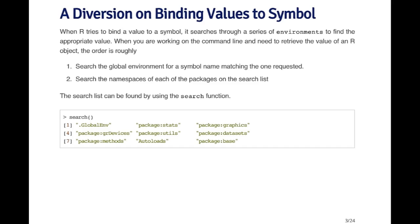When R tries to bind a value to a symbol, it searches through a series of environments to find the appropriate value. Environments are kind of like lists of symbols and values. When you're working on the command line and need to retrieve a value of an R object, the first thing that happens is R searches the global environment for a symbol name matching the one requested.